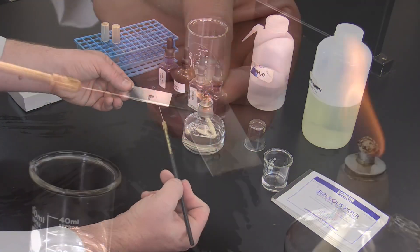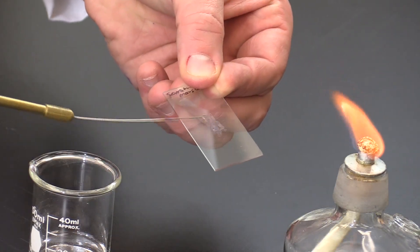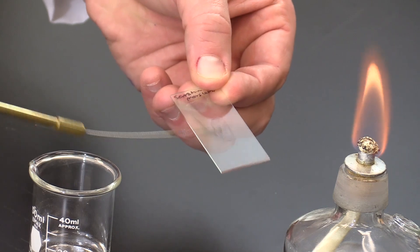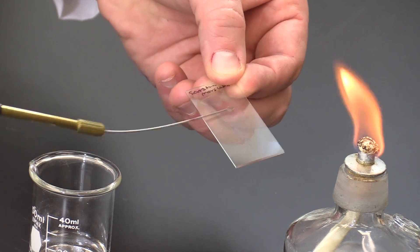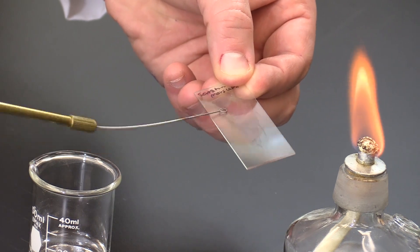Next, pick up the slide and add the bacteria to the water droplet. Mix and smear into a very thin layer. Creating a thin layer promotes drying as well as reducing clumps of bacteria.